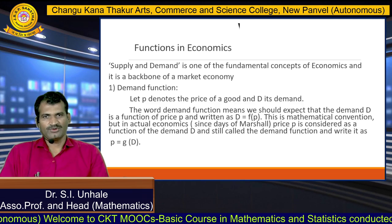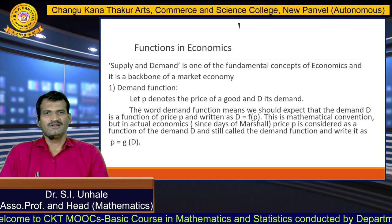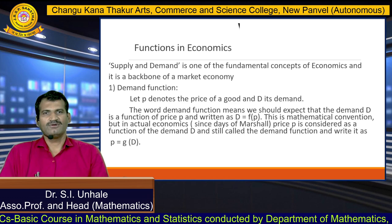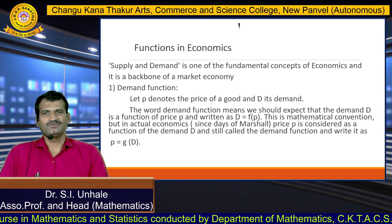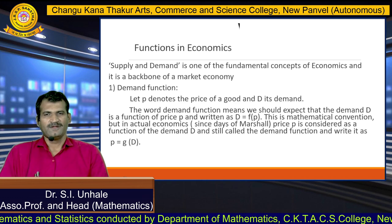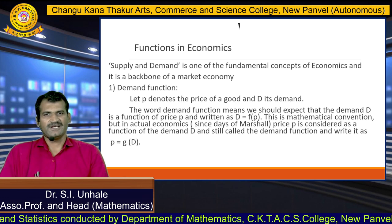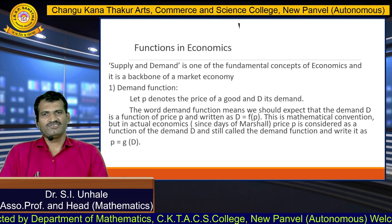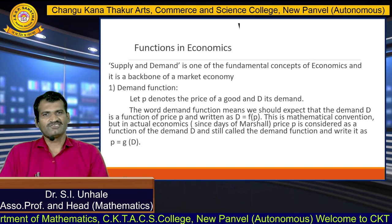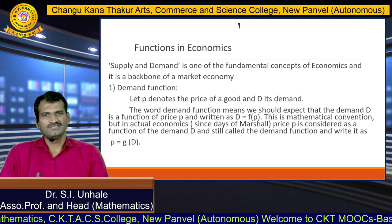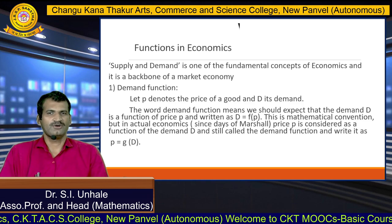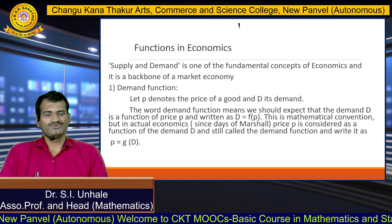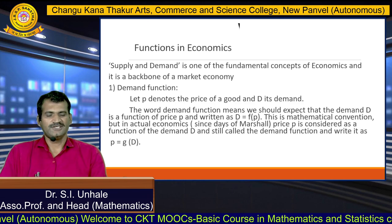But in actual economics, since the days of Marshall, price p is considered as a function of demand d and is still called the demand function. We write it as p equals g of d, where p is the price, d is the demand, and g is the notation for the function. So here, the demand function means p equals g of d in actual economics.